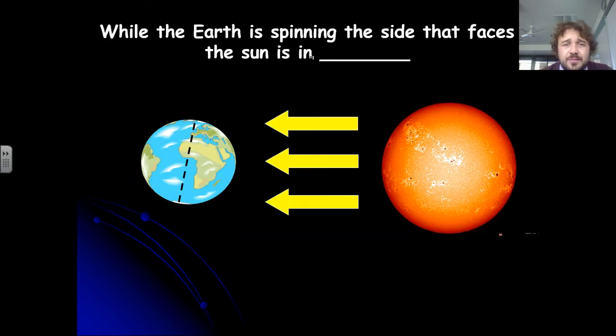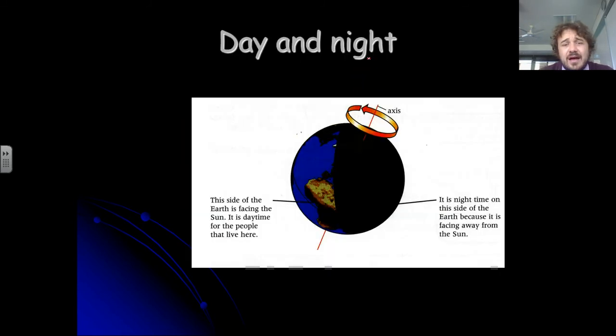So while the Earth is spinning, the side facing the sun is in daytime. So that's your day. The side that's facing the sun has the daylight. And here is a quick little bit of information about that. Essentially nighttime is really just a shadow, so all the sun's shining its light there, and whereas this side is just a shadow.